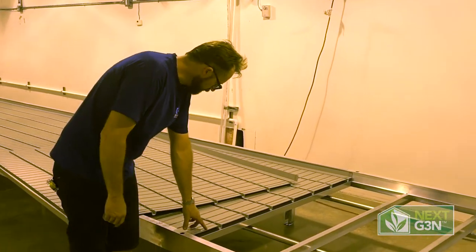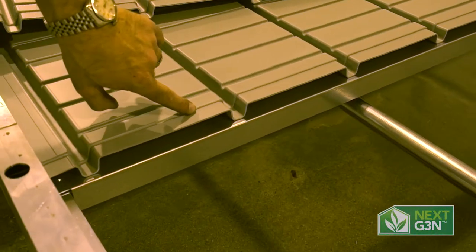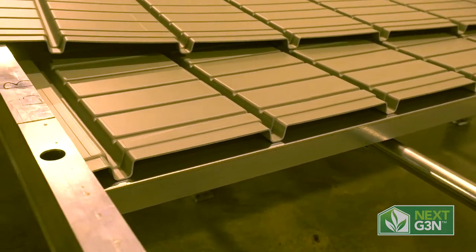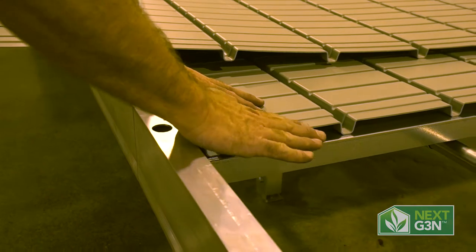Draw attention down here real quick, how the trays lay in here. One end has a flange. The other end goes straight across, so that when these get laid in, they overlap.